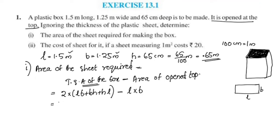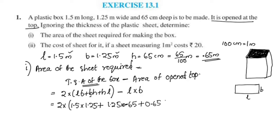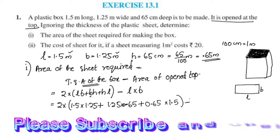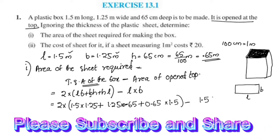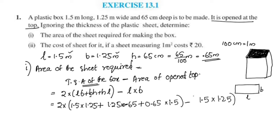Now we substitute the values: 2 times (L × B + B × H + H × L), where L = 1.5, B = 1.25, and H = 0.65. So it becomes 2 times (1.5 × 1.25 + 1.25 × 0.65 + 0.65 × 1.5).